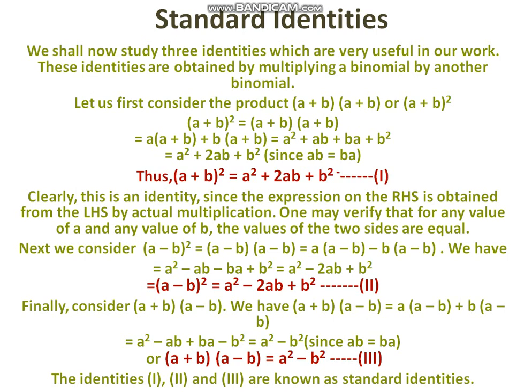Next, standard identities. We shall now study three identities which are useful in our work. These identities are obtained by multiplying a binomial by another binomial. First, consider (a plus b) into (a plus b), that is (a plus b) whole square. Expanding: a into a is a squared, a into b is ab, b into a is ba, b into b is b squared. Since ab plus ba equals 2ab, we get: (a plus b) whole square equals a squared plus 2ab plus b squared.